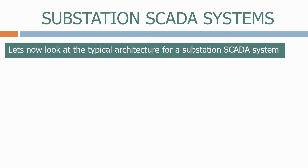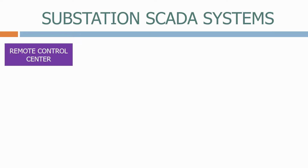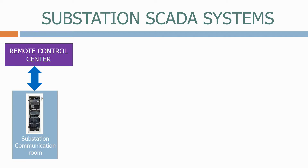Let's now look at the typical architecture for the substation SCADA system. Firstly, we have the remote control centre as seen previously. This connects via the communication channel to the substation communication room that holds all the panels that interface with the fiber optics system. This is where all the fiber optics communication cables are terminated.